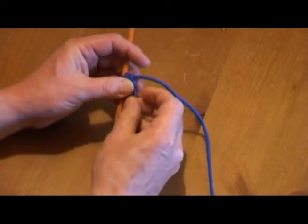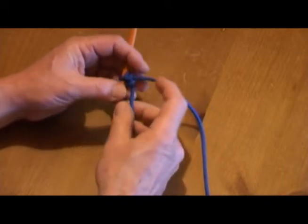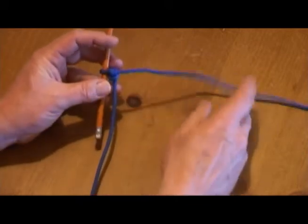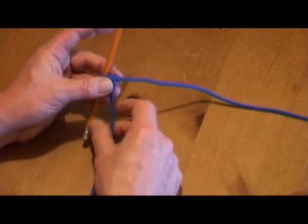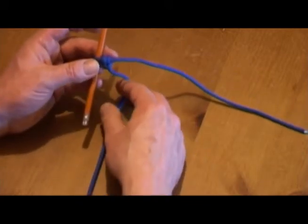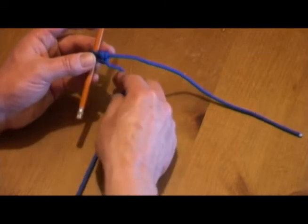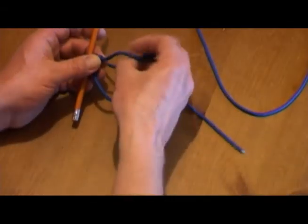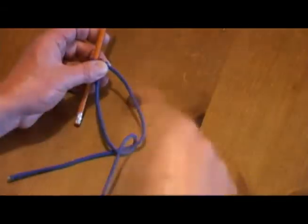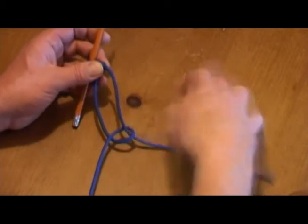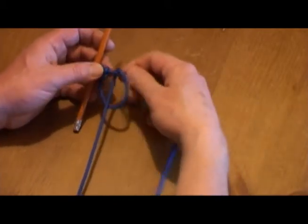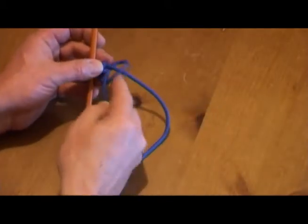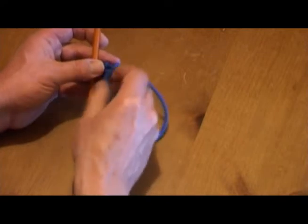Now you'll notice the working end is pointing downwards. So instead of going round the back, because it's pointing downwards, we've got to take it over the front of the standing end to tie the next half hitch. So when the working end is pointing up, we start the next half hitch by going round the back. When it's pointing down, we take it over the front to tie the next half hitch.